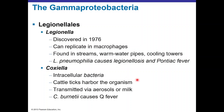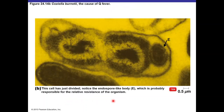Coxiella is an intracellular bacteria that can live in cattle ticks but is transmitted via aerosols or milk rather than tick bites. Coxiella burnetii causes Q fever, similar to rickettsia in that it causes spotted fever. It produces an endospore-like body, as shown in a transmission electron micrograph.